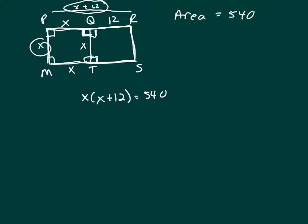If I can solve for X, then I can multiply it by 12 and I'll have the area of this rectangle, what I'm trying to figure out. So this is X squared plus 12X equals 540. And this is X squared plus 12X minus 540 equals 0.